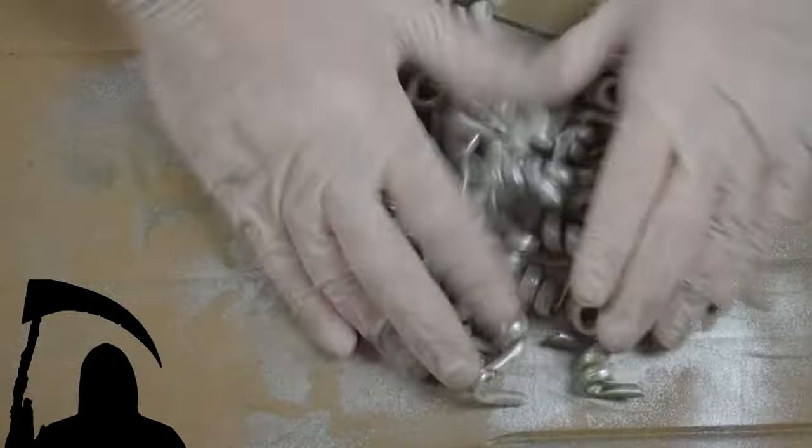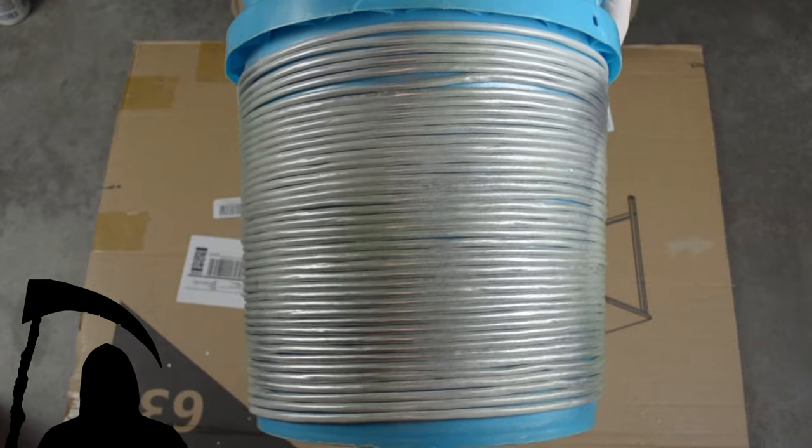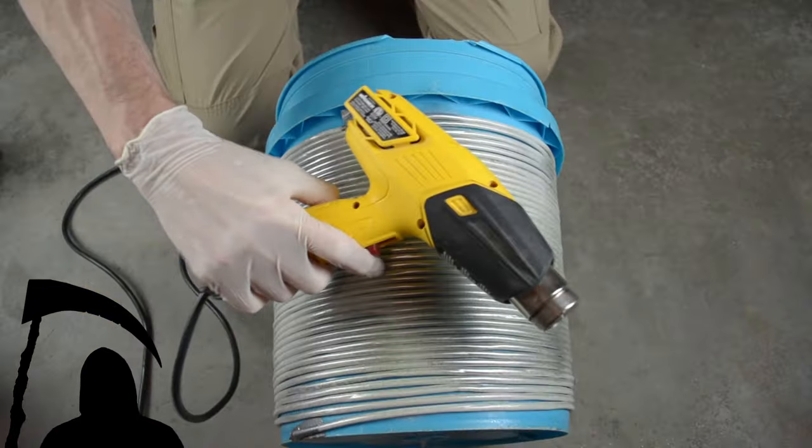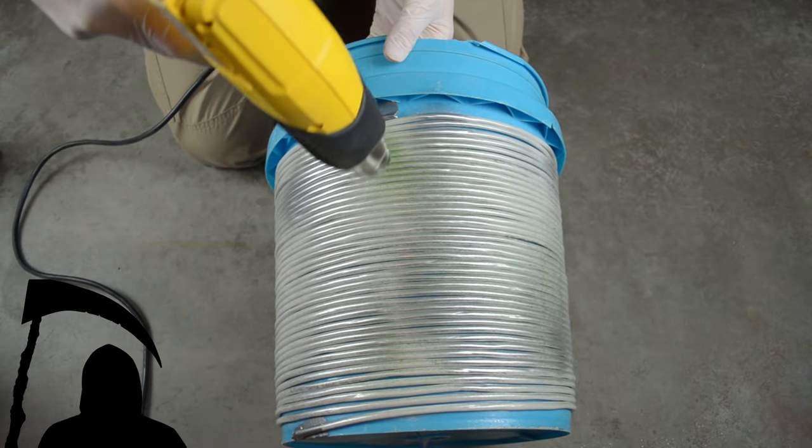I spray-painted the barbs and coiled wire with irregular patterns of chrome and green. Running a heat gun over the coil helps to lock it in that position.